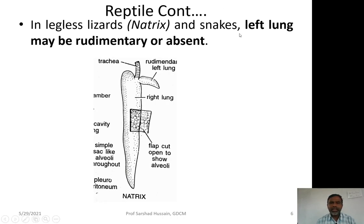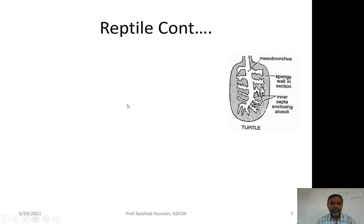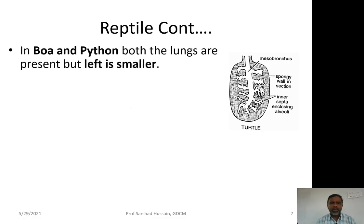In legless lizards like Natix and in snakes, the left lung may be rudimentary or absent, leaving only the right lung. In some other snakes like boa and python, both lungs are present but smaller in size.